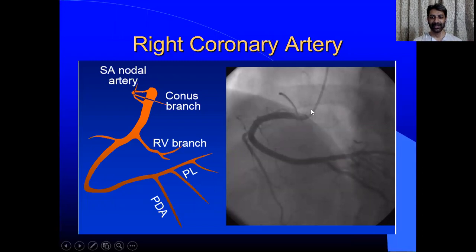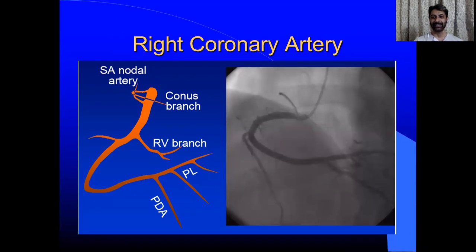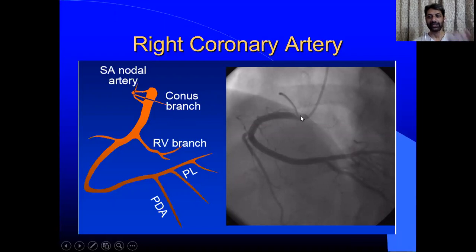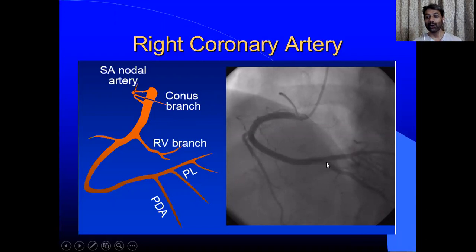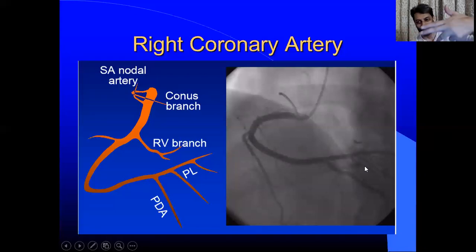This is the RCA you see. Always remember this — even those not posted in the cath lab can easily understand that this is RCA giving a sinodal branch and conus branch. There is a detail that sometimes these branches are separate and sometimes within RCA. Then this is acute marginal. And this is the point where RCA divides: distal RCA, Posterior Descending Artery, Posterior Atrioventricular, and then these branches are all PLVs — after the Posterior Atrioventricular further divides.